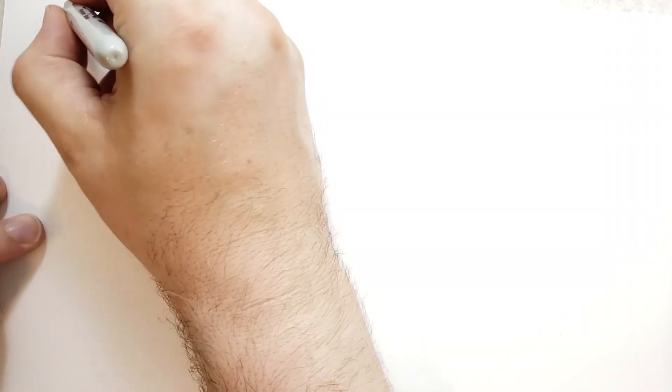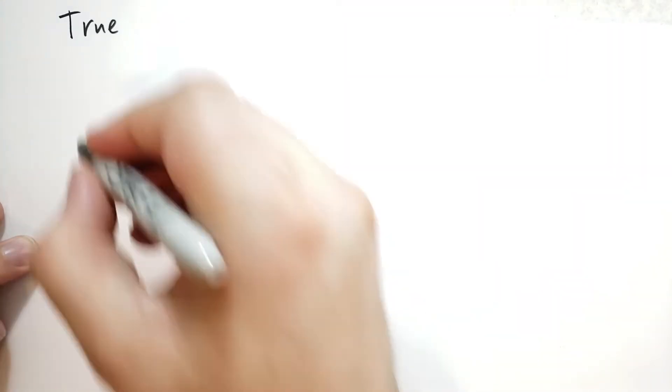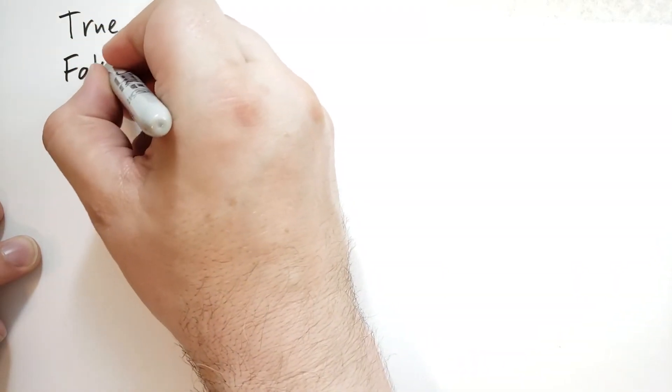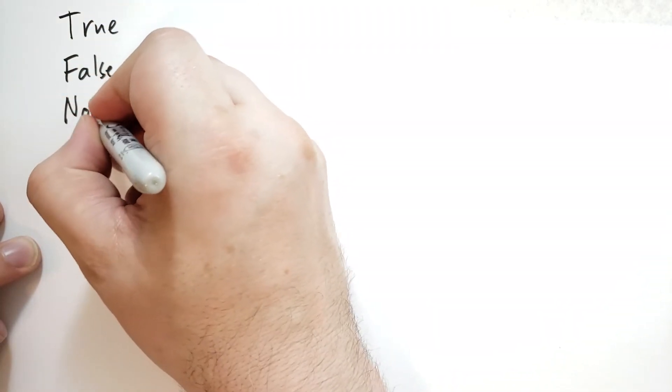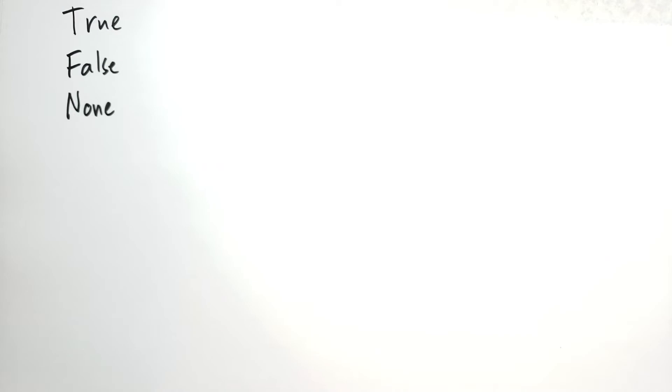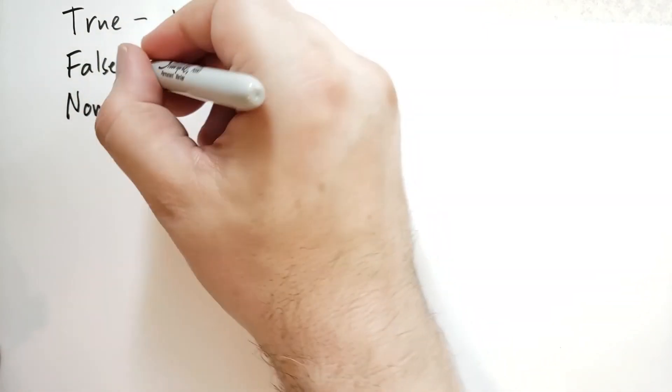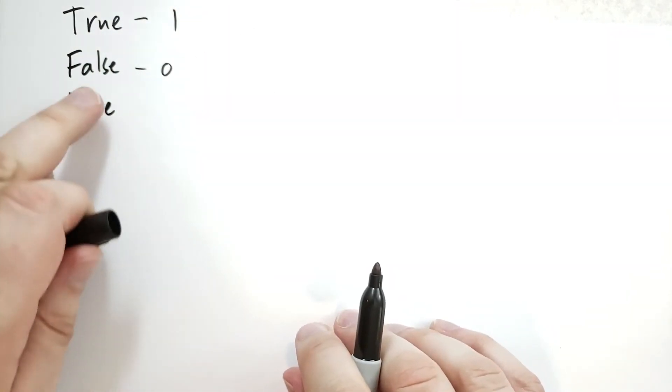There are some special variables in Python. I'm going to name them here, and you'll understand what they are later. One is called True. The other is called False. And the third is called None with capital N. So True has the integer value of 1, False has the integer value of 0.